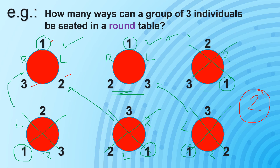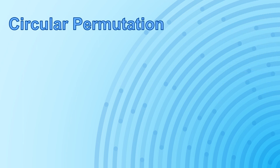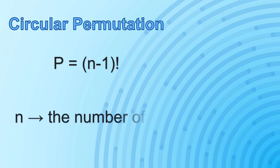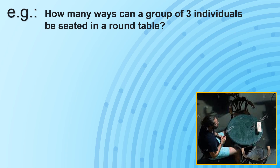So that is the reason why we have a different permutation whenever we are dealing with circular arrangement. That's why, if we are dealing with circular permutation or circular arrangement, we use the formula P equals (n minus 1) factorial. Our n represents the number of elements present in the problem. So if we are to answer the same problem again, since we are now aware of the formula under circular permutation, we can now easily determine the possible arrangement. We must obtain 2, the number of arrangements from our listing process. So we have P equals (n minus 1) factorial, replacing n by 3.